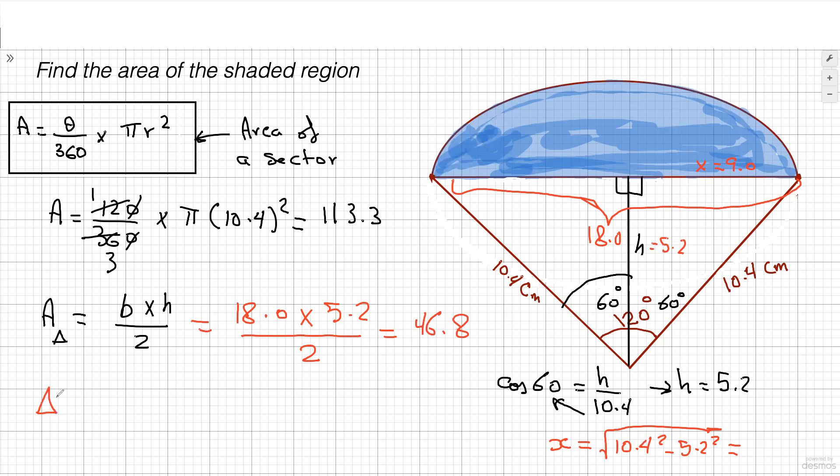Now, the area of the shaded region would equal 113.3 minus 46.8. So, which is the area of the whole sector altogether, taking away the area of the triangle, which gives you 66.5 centimeters squared. And that's basically the answer for this.